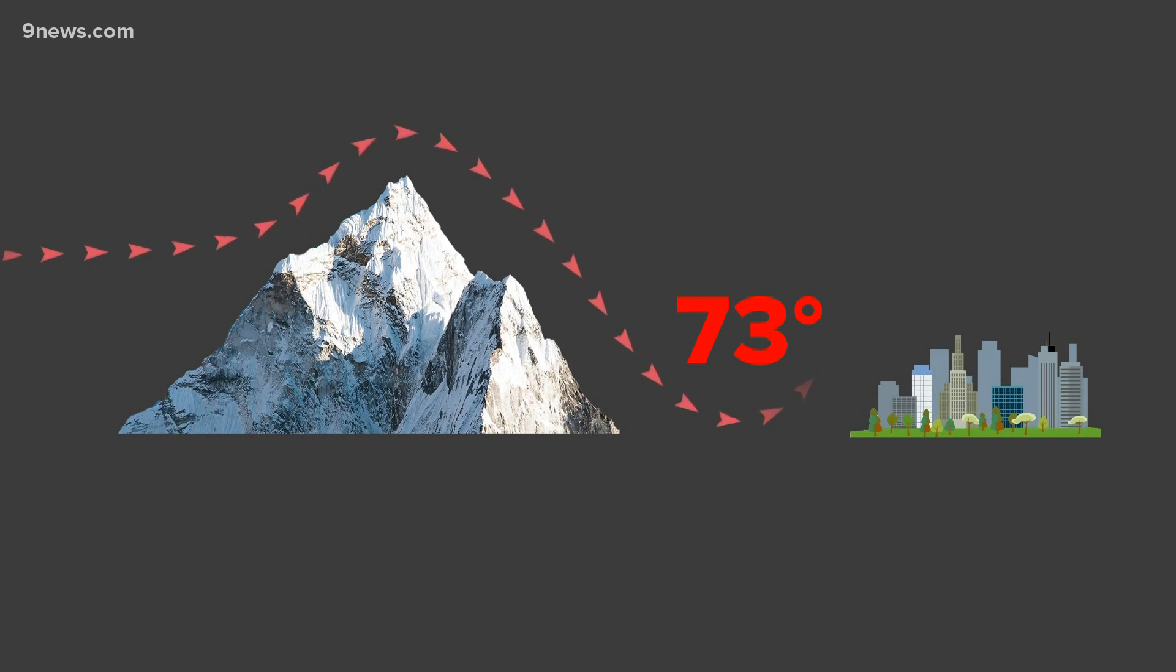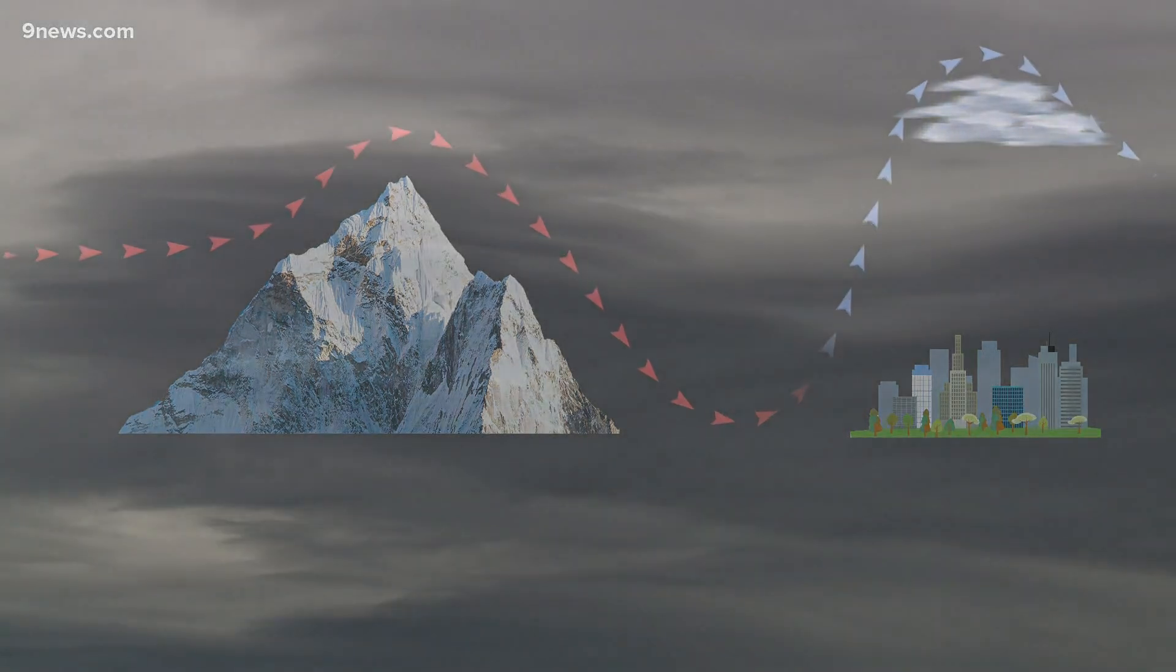And as that air in the wave rises again, it cools and condensation occurs in the crest of the wave. That is how we get the standing mountain wave cloud, which lasted well into the afternoon hours on Wednesday.